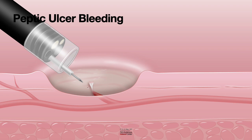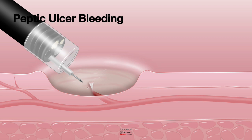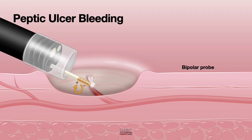Epinephrine causes vasospasm and stops the bleeding. However, because the effect is temporary, whenever you treat peptic ulcer bleeding with epinephrine you should follow up with additional means of controlling the bleed — either with a heater probe, a gold probe, or a bipolar probe to cauterize the vessel. So for peptic ulcer bleeding: epinephrine injection in small or large amounts, combined with additional cautery, is important.